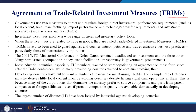Generally any government uses two measures to attract and regulate foreign direct investment. One is performance-based requirements such as local content, growth of local manufacturing, export performance, and technology transfer requirements. Another is through investment incentives like loans and tax rebates. When these incentives are related to trade in goods, they are called trade-related investment measures.